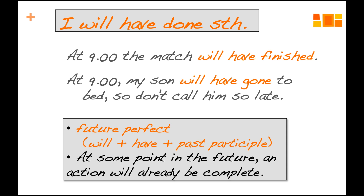This tense is called the future perfect. To produce it is quite easy: it's 'will + have' — it's always 'have,' there is no 'has' here — plus the past participle. So this is like the present perfect, just 'have + past participle,' with a 'will' in front of it. We use it when we want to express that at some point in the future, an action will already be complete, will already be finished — the action will not be in the middle, like with the future continuous.